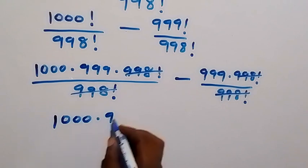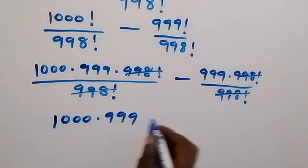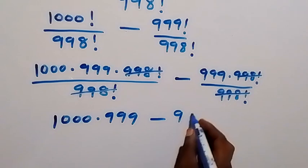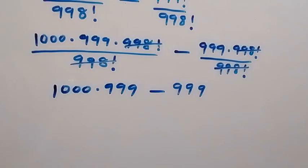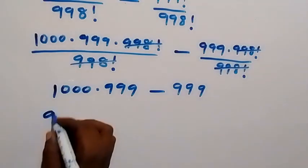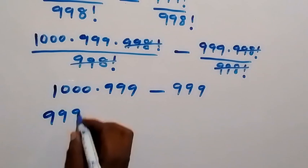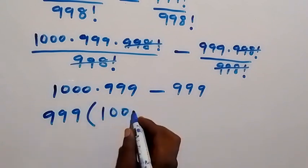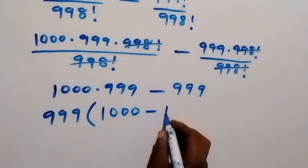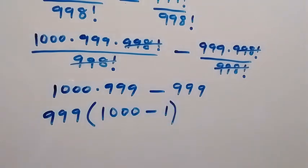Then in the next step, we have 999 common here. When we factor it out, we have 999 into bracket, 1000 left here, then minus 1 left here.